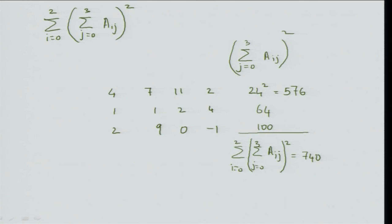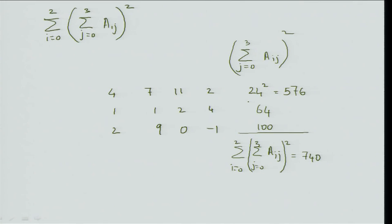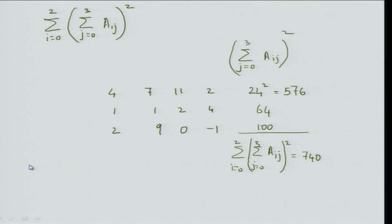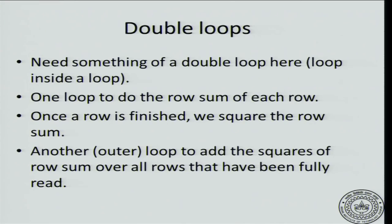Notice that when we did this by hand, we first calculated row-wise: we summed all the numbers in a given row, took that sum and squared it, then repeated the same operation for the next row, and then for the third row. So we have three numbers which we then added in sequence. We will now see how to code this up using an inner loop, or a double loop — a loop inside a loop.